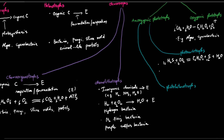Examples of photo-lithotrophs are purple sulfur bacteria and green sulfur bacteria. As for photo-heterotrophs, they can photosynthesize; however, they can't convert carbon dioxide into organic compounds.